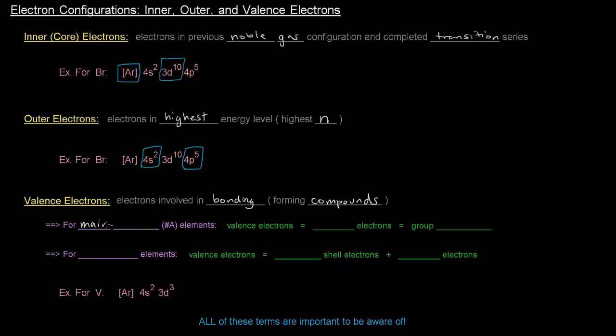Now which electrons specifically are the valence electrons? Well, for main group elements, which are the elements that are numbered as a number and an A next to it, so group 1A, 2A, 3A, 4A, 5A, 6A, 7A, and 8A, those are the main group elements.